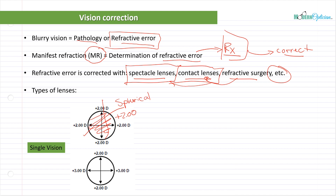Another type of single vision lens is a toric lens, or sphero-cylinder — the same concept used to correct one focal distance, but with different powers along different meridians. The horizontal line is the 180-degree meridian and the vertical line is the 90-degree meridian. Along one axis it's a plus three and along the other it's a plus two. The vast majority of lenses we use actually fall in this category, and this is used to correct people with astigmatism.